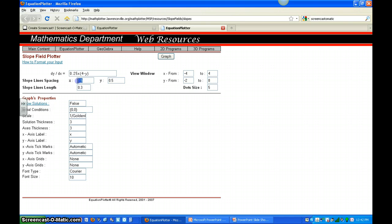I would like to show a slope field every one unit for the x value and every half unit for the y value. I would also like to include an initial condition. The initial condition will be 0,6. Then I'll press graph.